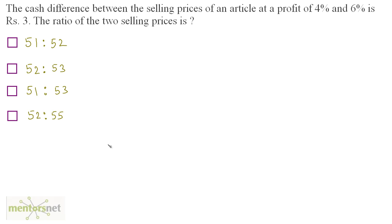The cash difference between the selling prices of an article at a profit of 4% and 6% is Rs. 3. Find the ratio of the selling prices.